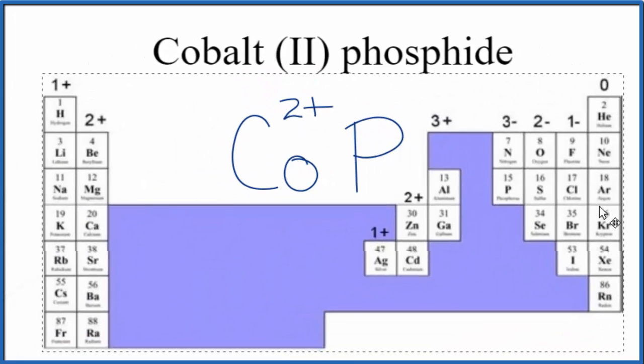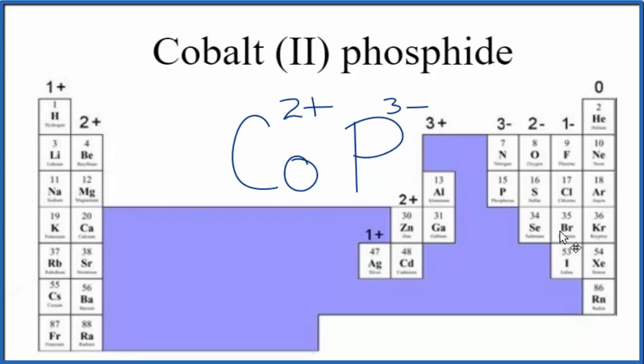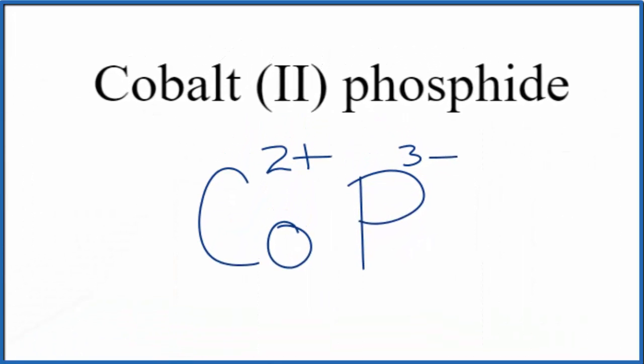Phosphorus, let's look that up on the periodic table. Phosphorus is right here below nitrogen, 3-. So we can put a 3- here for the phosphorus. So we have the charges for cobalt (II) phosphide, for the elements in cobalt (II) phosphide.